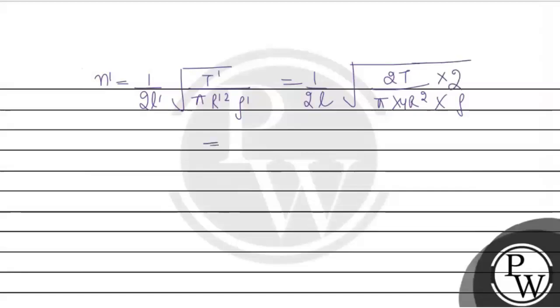Okay. So, what will get? 1 upon 2L under the root of. 2 to the 4 divided by 4 is cancel out. 4 by 4 cancel out hojaega. Divide by T. Pi r square into rho. So, 4 sa maara 4 kata. That can be thought to be 1 by 2L under the root of T upon pi r square root. Ye hamaari n prime hagi.